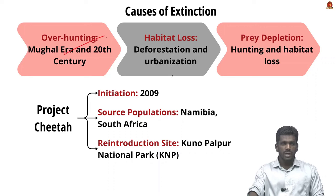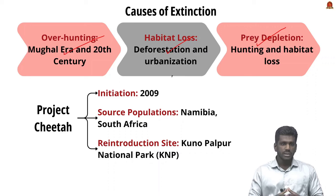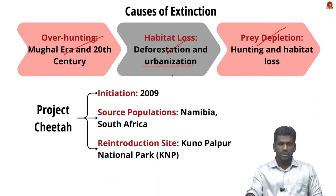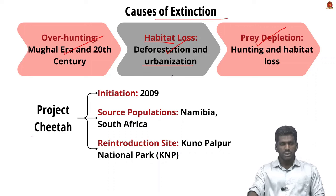The three main reasons for the extinction of cheetah in India are: over-hunting, habitat loss, and prey depletion. During the Mughal era, cheetahs were heavily hunted — for example, Emperor Akbar held a thousand cheetahs in his captivity. Deforestation and rapid urbanization caused loss of habitat, and due to loss of habitat, their prey also depleted, further contributing to their extinction.